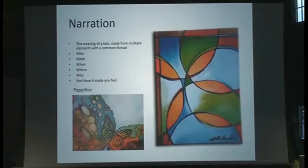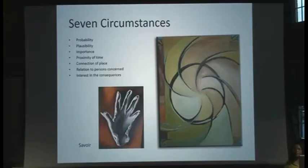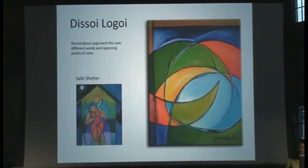And then there are some that are much easier. The narration — it's a weaving of a story. It's the who, the when, the what, the where, the why, that kind of makes up who we are, how we feel, and how we think about things. You'll see there are some corresponding art to some of these pieces that were kind of built after the concept piece. Seven Circumstances — this is one that's still in development, because it's actually one of my favorites. It talks about probability, plausibility, importance — all of these things that really help make a persuasive argument.